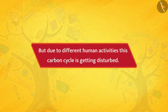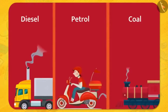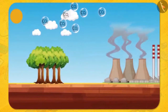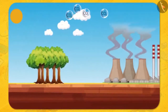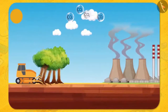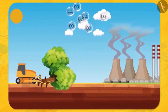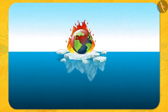But due to different human activities, this carbon cycle is getting disturbed. Human activities like burning of fossil fuels release a lot of carbon dioxide into the atmosphere. And the main job of absorbing this carbon dioxide is done by the trees. But humans are cutting down the trees as well, which leads to an increase of carbon dioxide in the atmosphere, causing global warming.